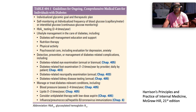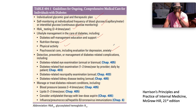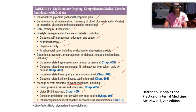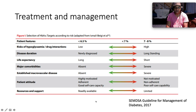These are the Harrison's guidelines for comprehensive medical care in persons with diabetes. Key elements include: individualized glycemic goals and therapeutic plans; self-monitoring of blood glucose or interstitial glucose at individualized frequency; HbA1c testing two to four times per year; lifestyle management including diabetes self-management education, nutrition therapy, physical activity, and psychosocial care including evaluation for depression and anxiety; detection, prevention, and management of diabetes-related complications; and management of blood pressure, lipids, consideration of low-dose aspirin, and immunizations including influenza, pneumococcal, hepatitis B, and coronavirus vaccines.